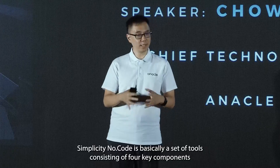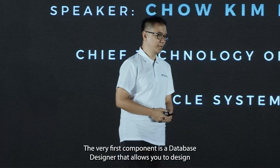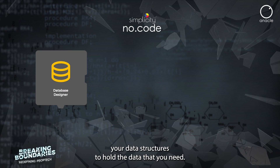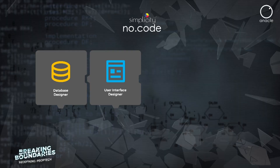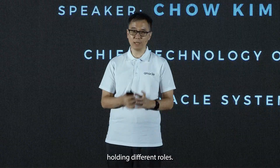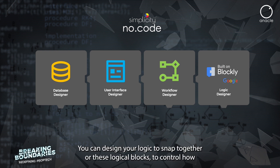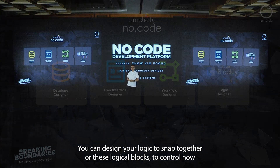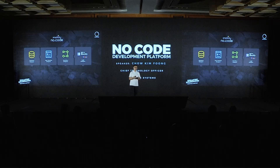Simplicity's No Code is basically a set of tools consisting of four key components that can help our users build new functionalities without actually writing programming code. The very first component is a database designer that allows you to design your data structures to hold the data that you need. Number two, a user interface designer to allow you to easily design forms inside Simplicity the way you want it to look. Number three, a workflow designer to allow you to design how these forms get routed to different colleagues in your company holding different roles. Number four, a logic designer using Google's beginner-friendly Blockly component — you can snap together logical blocks to control how your UI reacts to user input or to define custom business-specific computations.